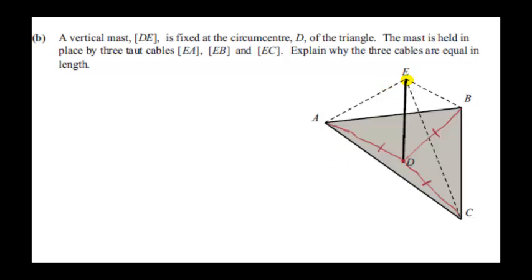We have three cables EA, EB and EC holding the mast in place. Notice that we have three right angle triangles. Here's one. Here's another. And here's the third. That's because the mast is vertical. So the mast is perpendicular to any line in this triangle. So the three red lines are in the plane of the triangle. So our mast is perpendicular to them.